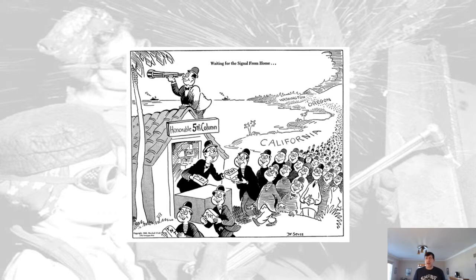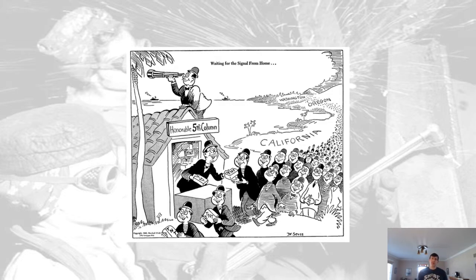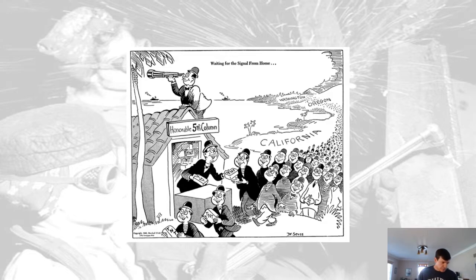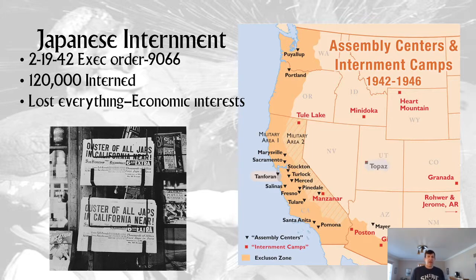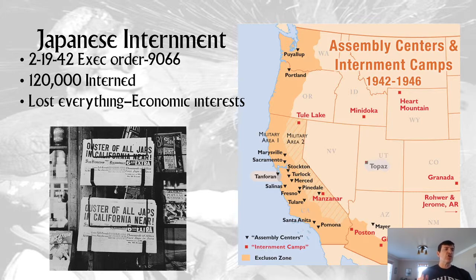Fifth column is another name for traitor. During the Spanish Civil War, Francisco Franco announced he had four columns marching on Madrid and a fifth column inside Madrid ready to rise up — thus 'fifth columnist' became a term for traitors. On February 19, 1942, there was an executive order issued by President Roosevelt as a wartime measure to intern Japanese Americans along the West Coast. Eventually 120,000 people would be forced out of their homes — losing everything: their factories, businesses, farms — and shipped to concentration camps.